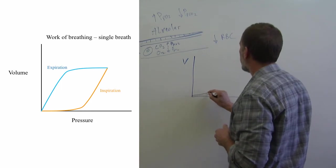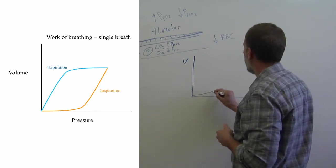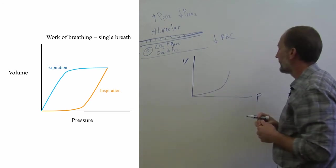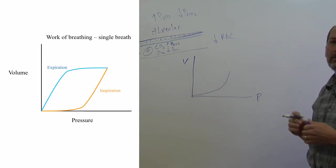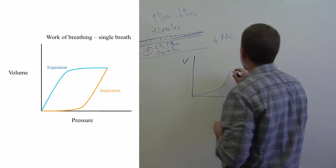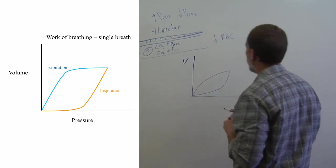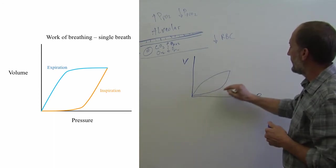And initially it takes a lot of pressure to bring that air in. And then the lung then takes more volume in easily. And then on expiration you see a hysteresis. And it goes down like this.